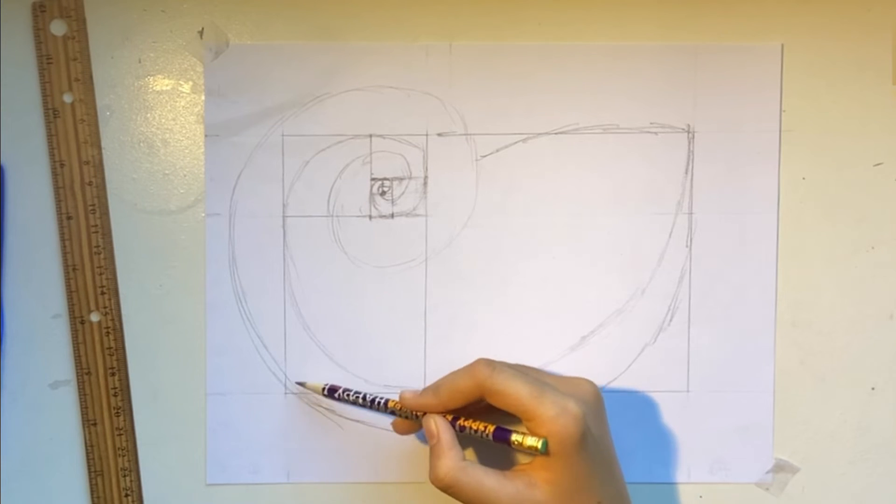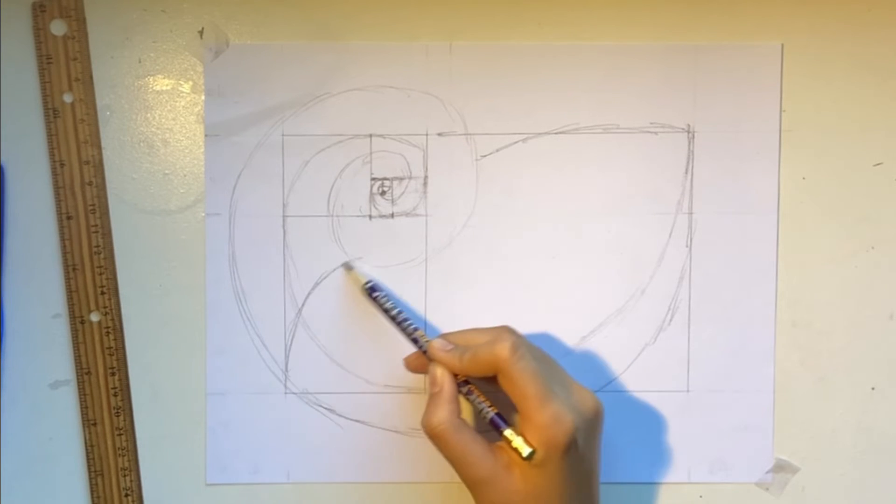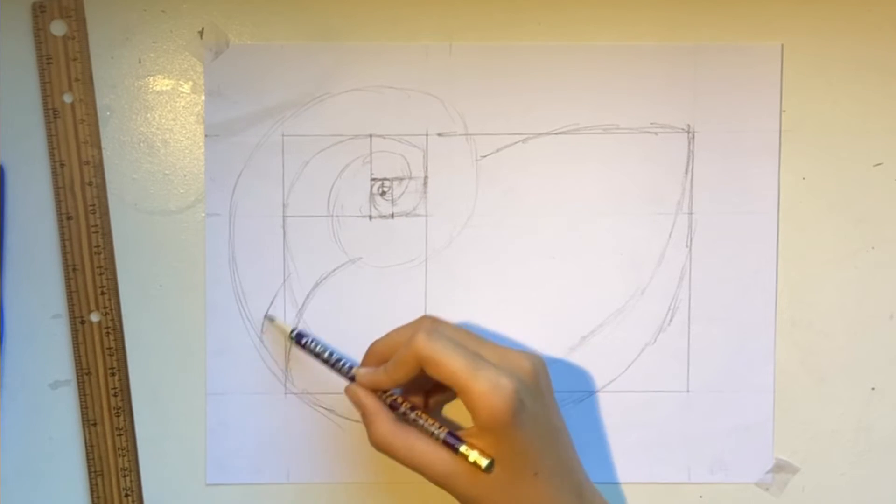Time to start decorating the shell. Draw curved lines along the spiral to form a 3D look on the shell.